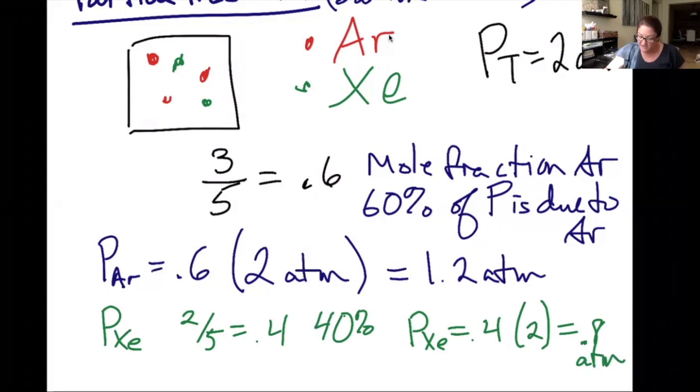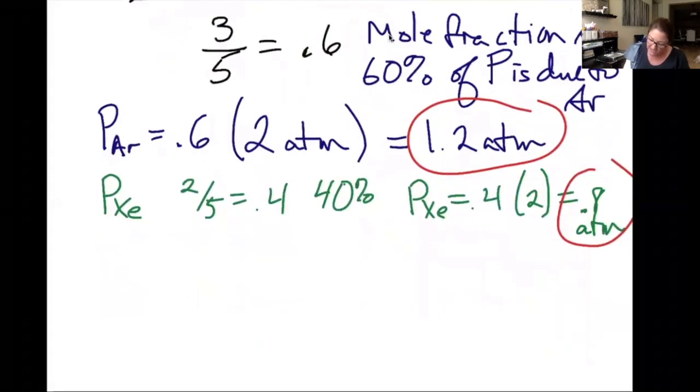One thing you should notice here is if I take my individual partial pressures, they should add up to the total pressure. That is, the partial pressure of whatever gases I have in the container will always equal the total. So since I already knew that argon was 1.2 and the total was 2, I could have solved by subtraction to get the partial pressure of xenon. But it doesn't necessarily have to be that way.